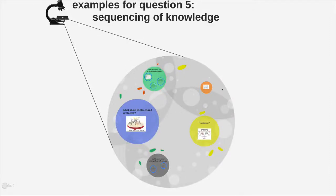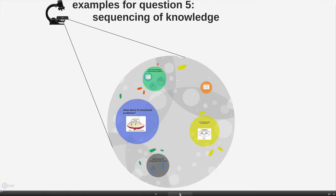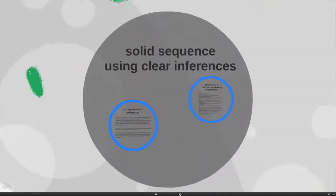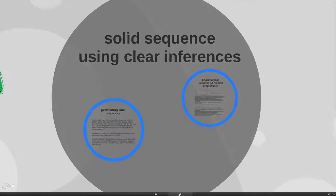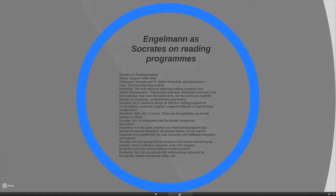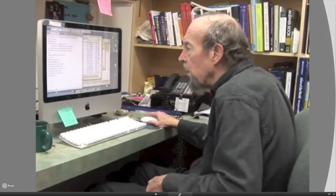So let's look at some examples for question five, the sequencing of knowledge. And let's start off right away with a favorite account of mine of direct instruction and how they work with sequencing. I think it's quite telling in terms of how it works both with a solid sequence, but also how they work with clear inferences. So let's start off by telling the story that Engelmann does. Engelmann's the guy who started off direct instruction.